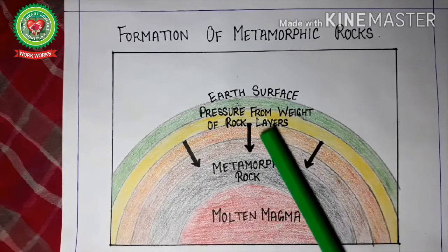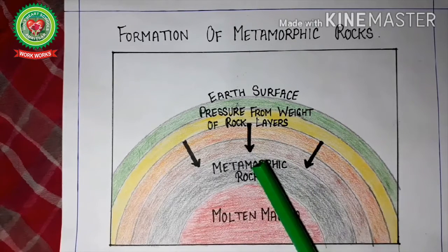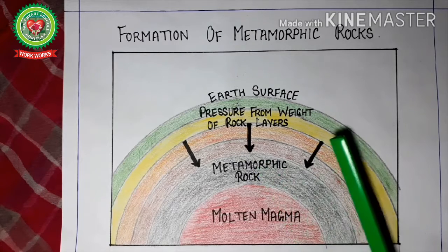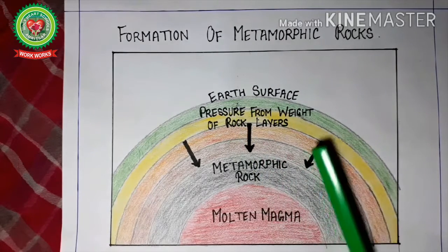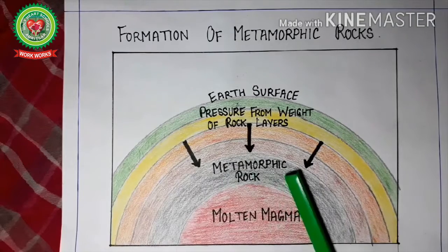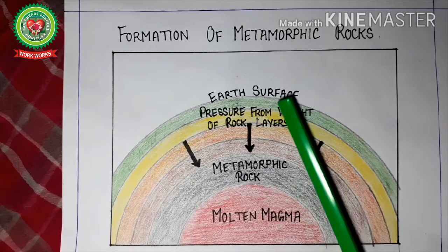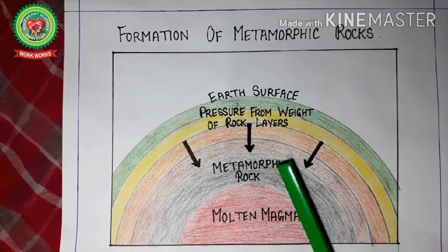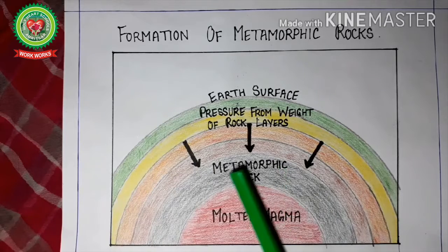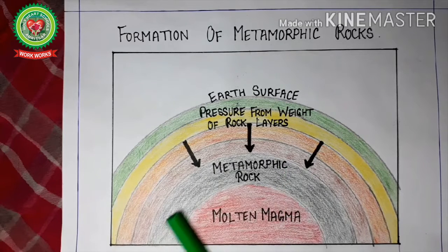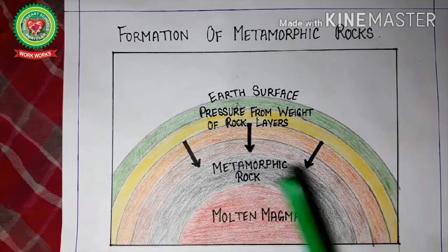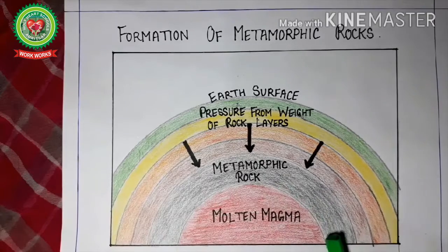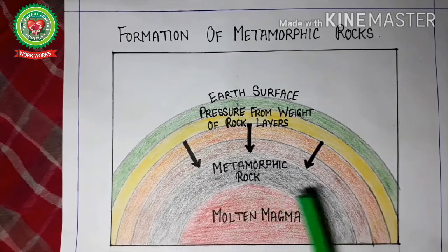As we go inside the earth, the temperature increases by 1 degree Celsius for every 32 meters of depth. The overlying rocks put a great pressure on the underlying rocks. So due to high pressure and high temperature inside the earth, the interior rocks change their form chemically or physically, and thus metamorphic rocks are formed.